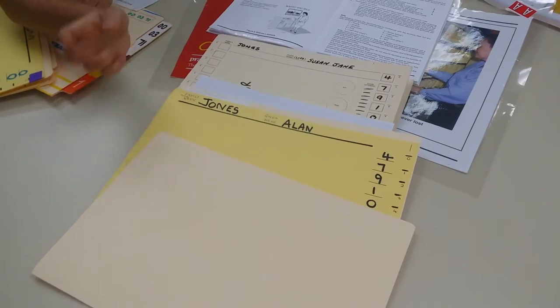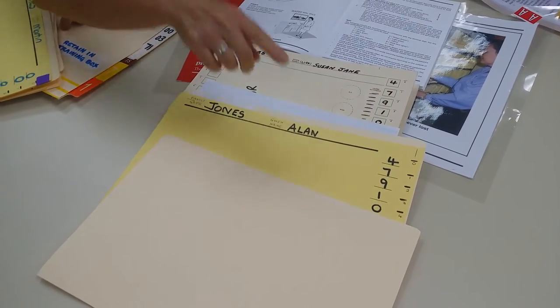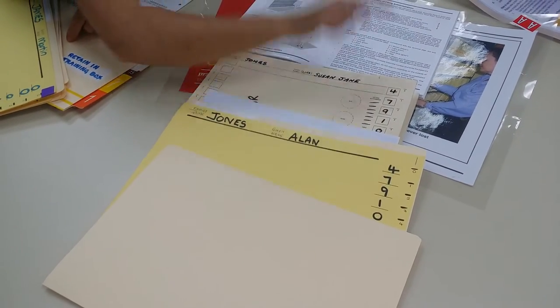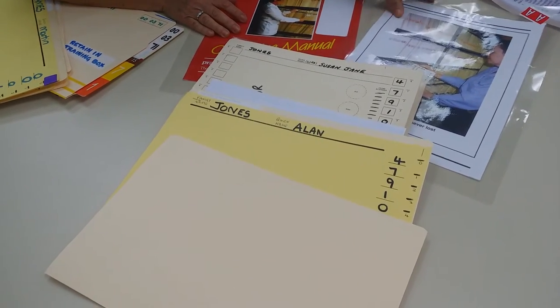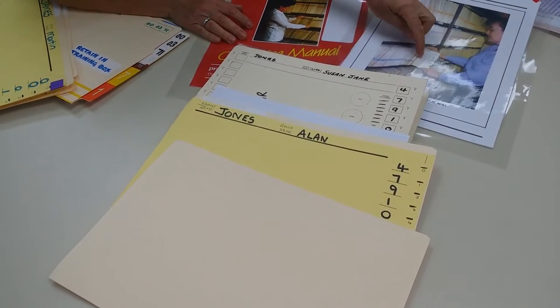and maybe the baby is called Alan, then a new file would be set up for Alan Jones and he would have exactly the same file number, 01974. So they will sit beside one another on the shelf as a family group.